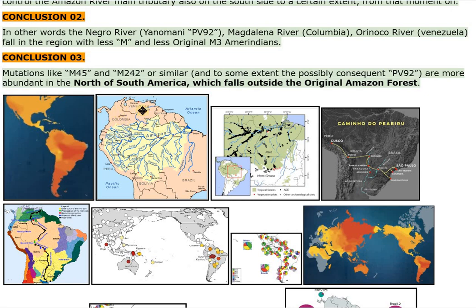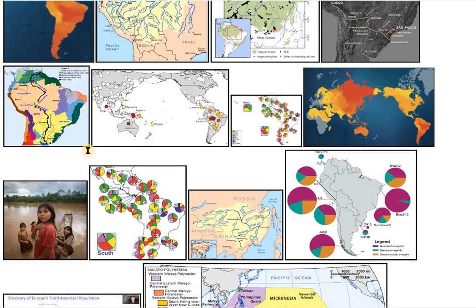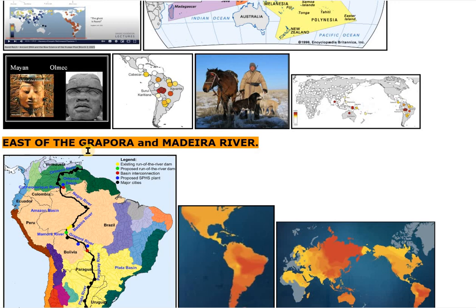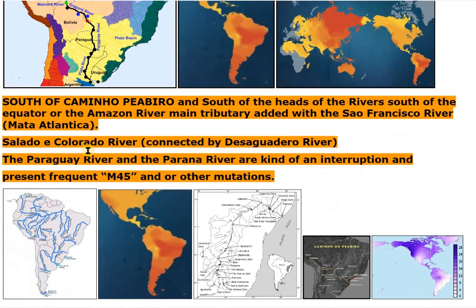Conclusion 03: Mutations like M45 and M242 or similar, and to some extent the possibly consequent PV92, are more abundant in the north of South America, which falls outside the original Amazon forest — east of the Grapera and Meteora River, south of Caminho Piburu and south of the heads of the river south of the equator or the Amazon River main tributary, added with the San Francisco River, Mata Atlantica, Salado y Colorado River connected by Desaguadero River. The Paraguay River and the Parana River are kind of an interruption and present frequent M45 and/or other mutations.